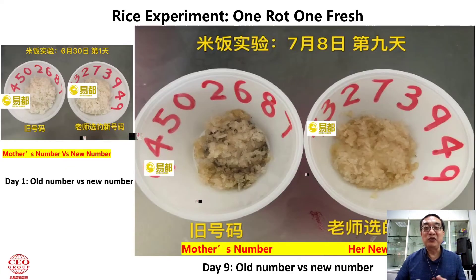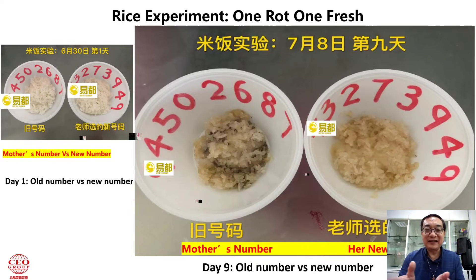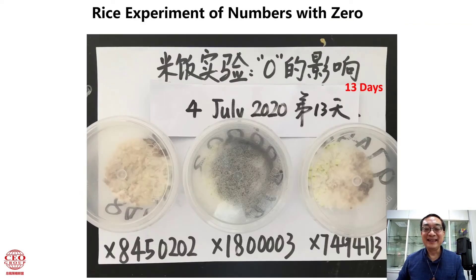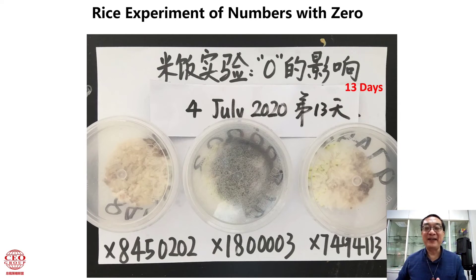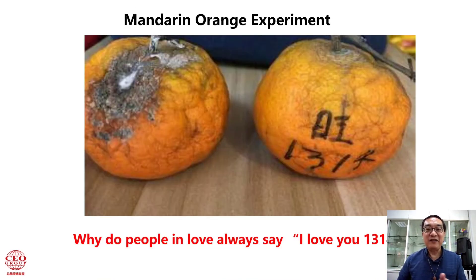You can also do the pear experiment — you'll realize the 218 pear's inner core is actually rotten. Then there's the rice experiment: put rice from the rice cooker into two bowls and write different mobile numbers on them. The one on the left with her mother's old mobile number — after nine days the rice gets a bit sticky and not so good. On the right, a new mobile number designed by our master, and the rice is quite okay. A mobile number with two zeros makes the rice darker; with four zeros, the rice could be totally black.